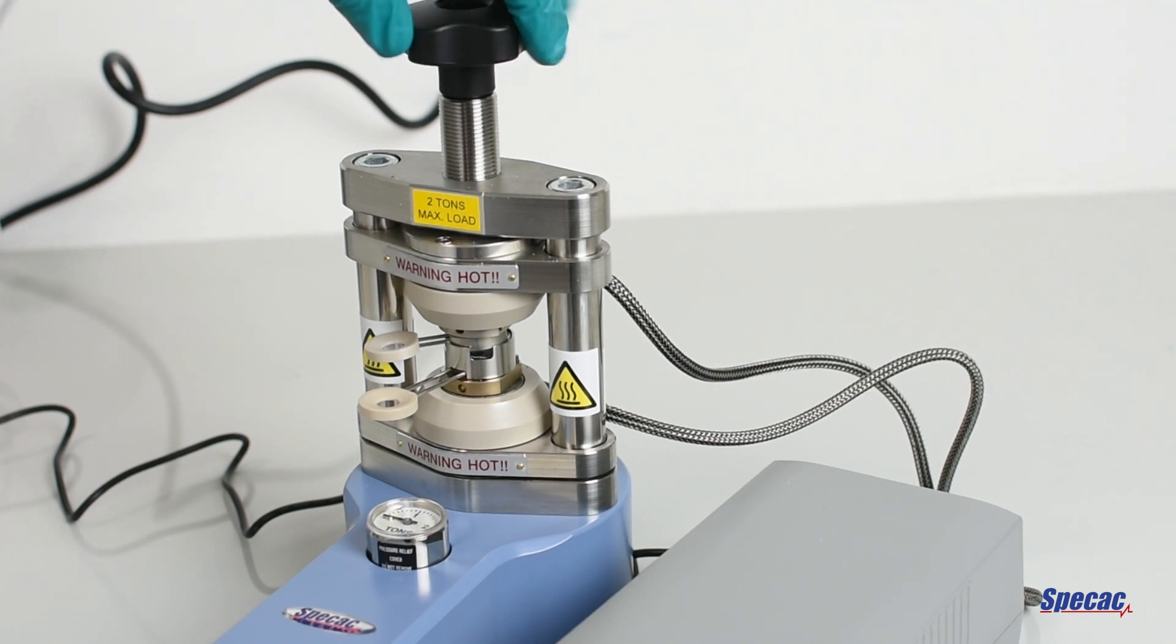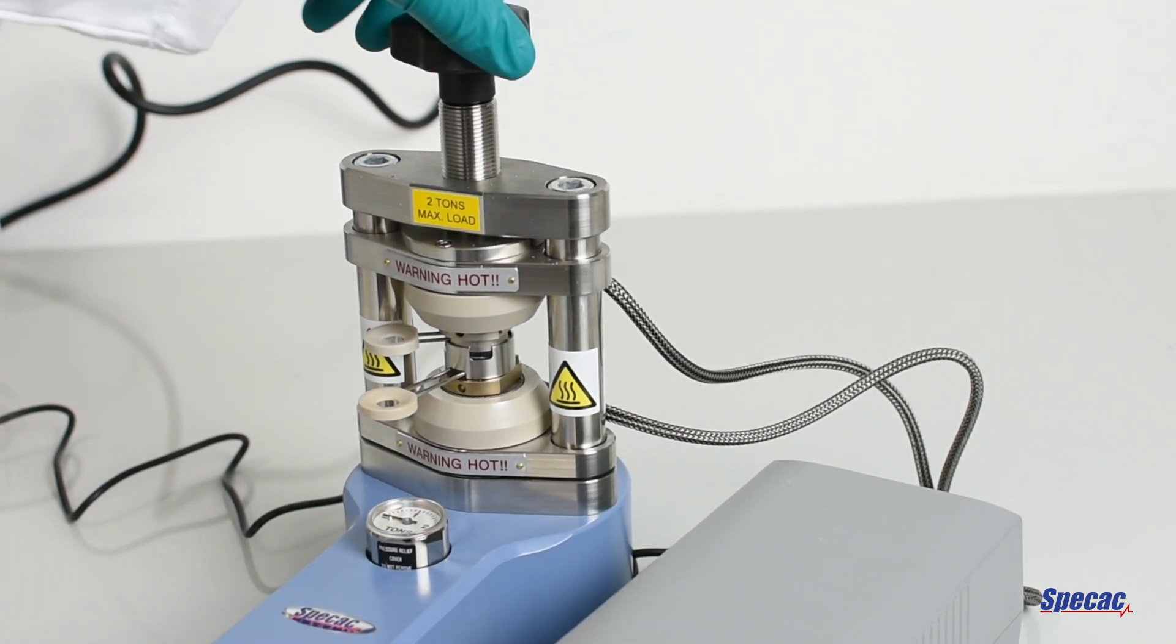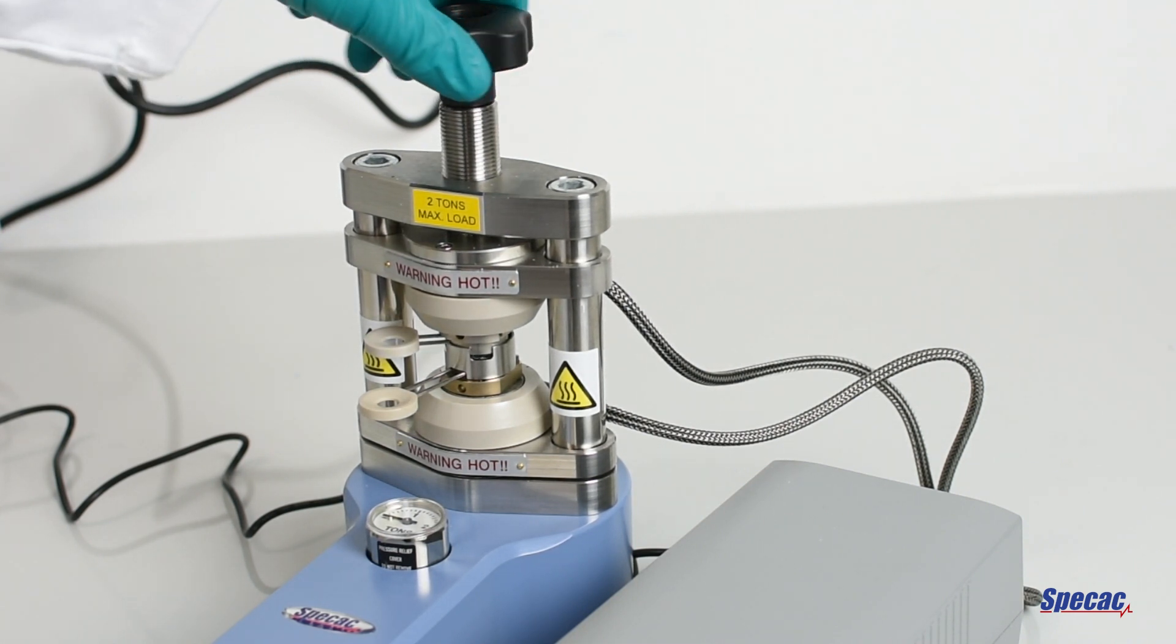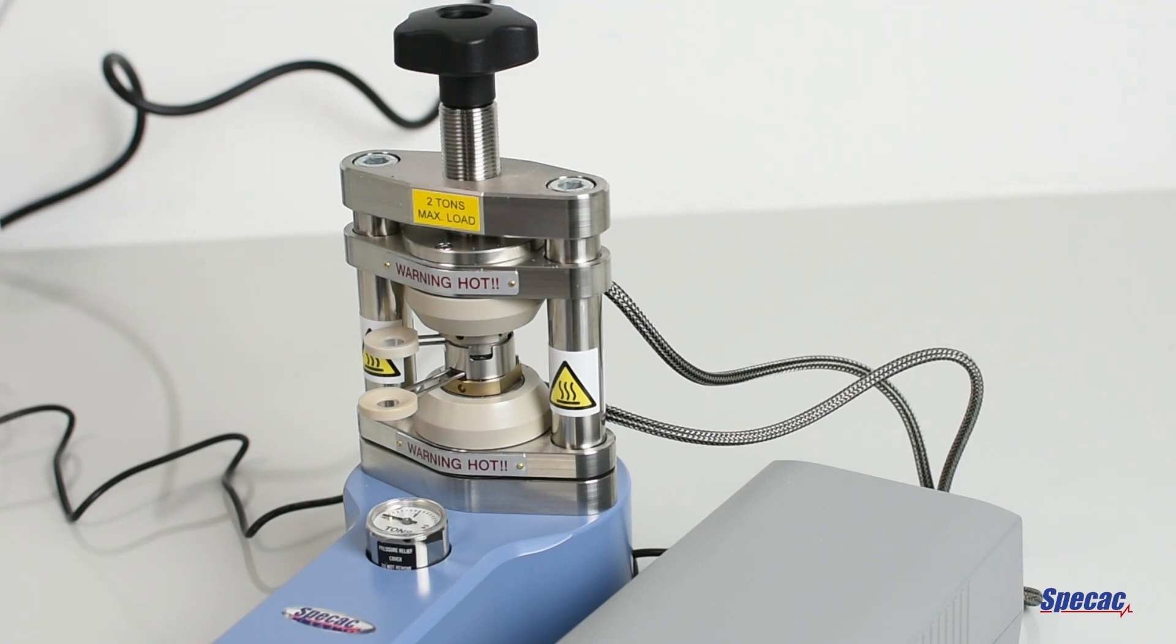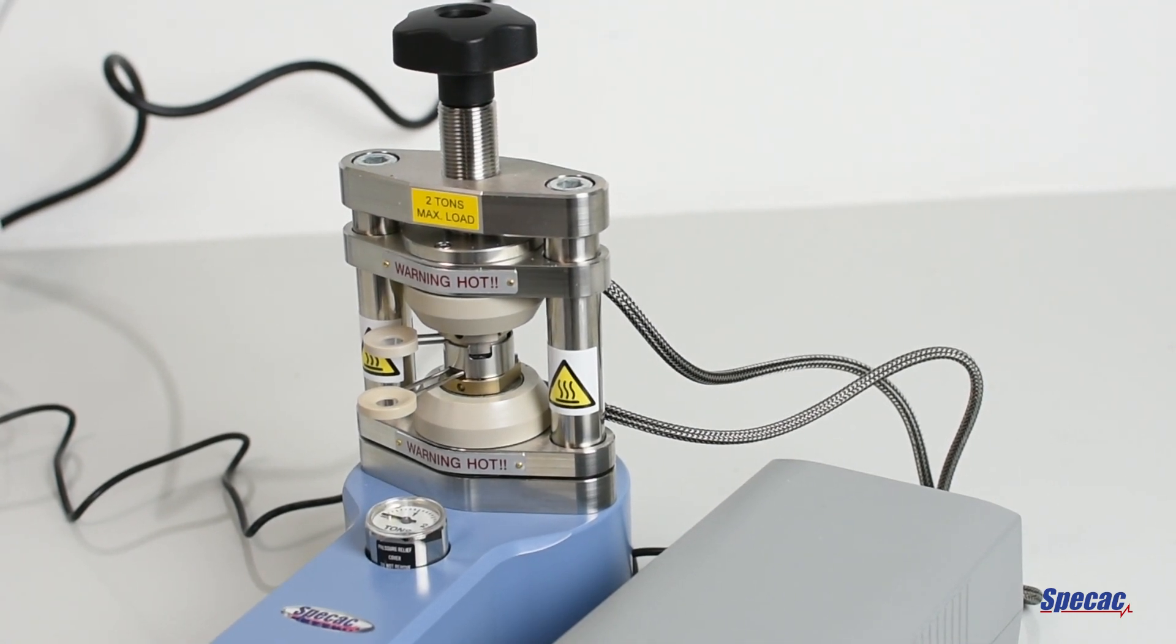Turn the lead screw knob clockwise to bring the top heated surface into close contact with the film maker parts to begin the process of heat transfer to the polymer sample. Initially, there will be a reduction in the actual temperature display value as the cold film maker assembly is introduced into the hot environment, but the assembly will return to the set temperature value within a short time.